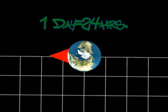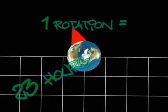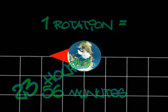As we know, one day takes 24 hours, but one rotation of Earth takes 23 hours, 56 minutes, and about four seconds.